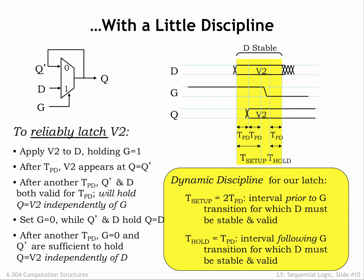In summary, the dynamic discipline requires that the D input be stable and valid both before and after a transition on G. If our circuitry is designed to obey the dynamic discipline, we can guarantee that this memory component will reliably store the information on D when the gate makes a high to low transition.